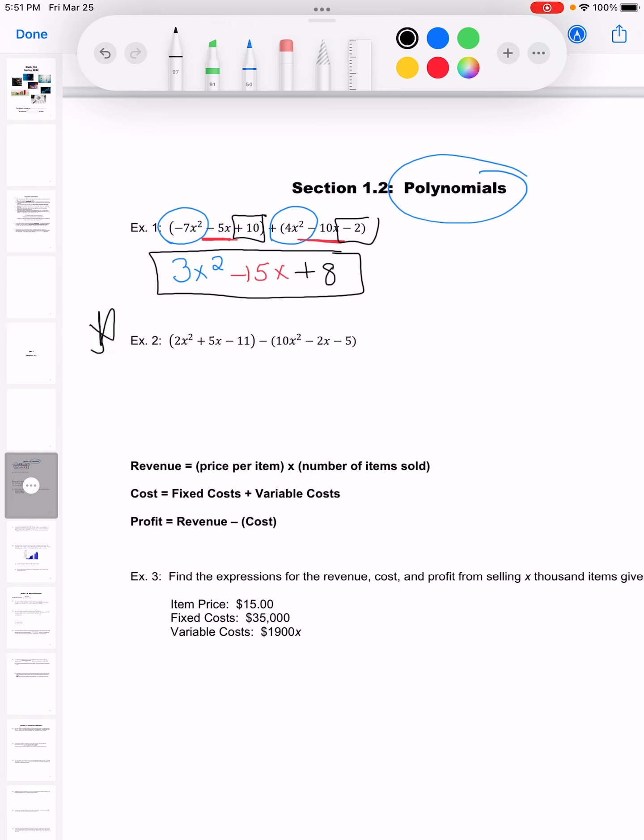Now, example 2 here, this is the one that gives people trouble. It's so tempting to jump right in and do exactly what I did in example 1, but there's a big difference, and that's because there is a negative sign right here. So this is subtraction.